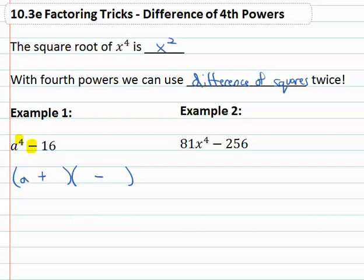The square root of a to the fourth we just said was a squared. The square root of sixteen, we know is four. Now here's the catch. The sum of squares is always prime. We can't do anything else with the sum of squares.